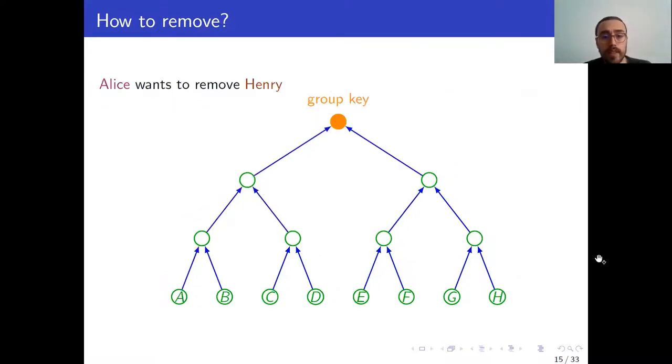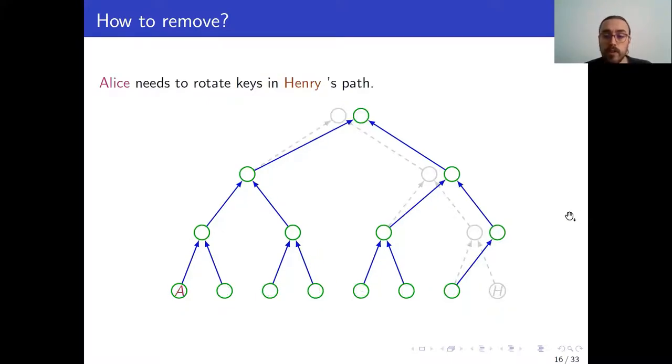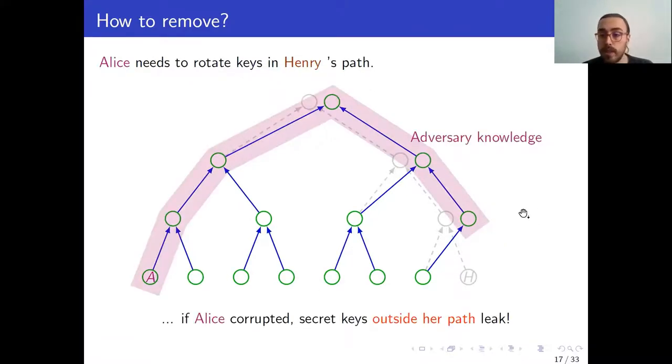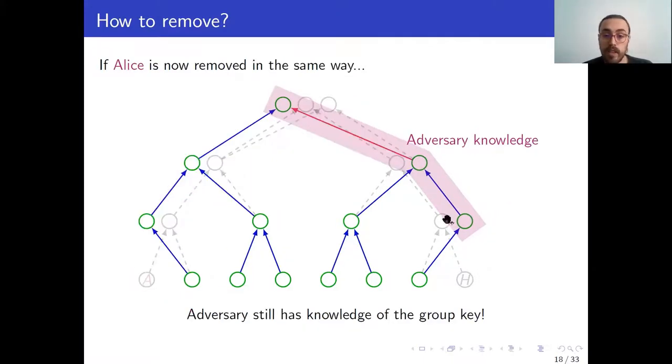The more interesting case, however, is removals. So let's say here that Alice wants to remove Henry, that's the rightmost user. So intuitively, what she needs to do is, similarly to the update, she needs to rotate the keys of the nodes in Henry's path, right? She could do this as before, just as we saw with the update. The issue here is that if it is Alice that samples these new keys, and if she was corrupted while doing so, then not only the keys on her path leak, but also the keys on Henry's path. So now, if we were to remove Alice in the same way, the adversary will still have knowledge of this key here, and in particular, will be able to decrypt this ciphertext and gain access to the new group key. And of course, this is not what we would expect. If we have a corrupt user and we remove them, we would expect to have security again.